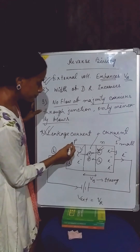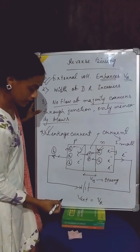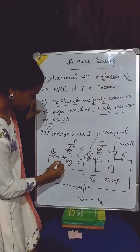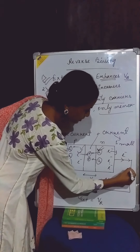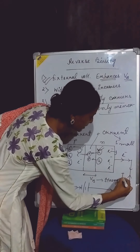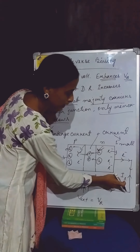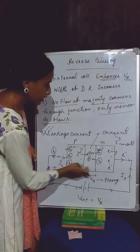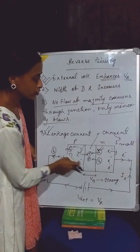So I am repeating once again: the P-section's majority holes are moving towards the negative terminal of the external battery, so in the opposite direction we will get a hole current. Similarly, the N-section's majority electrons move towards the positive terminal of the applied voltage, so in the opposite direction we get an electronic current. In this way, in the external circuit we will get hole current as well as electronic current flowing. But through the junction, the current flows only due to the minority electrons and minority holes.